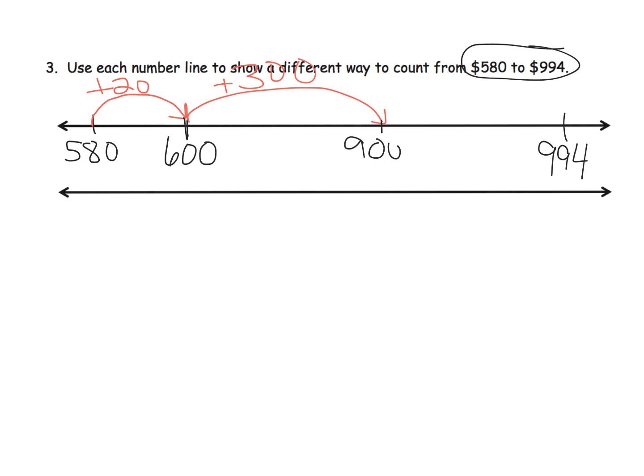And then if we wanted to, we could add another 90, add 90, that puts us at 990, and then we can go another four. I'm going to add four there, and that gets us to 994.